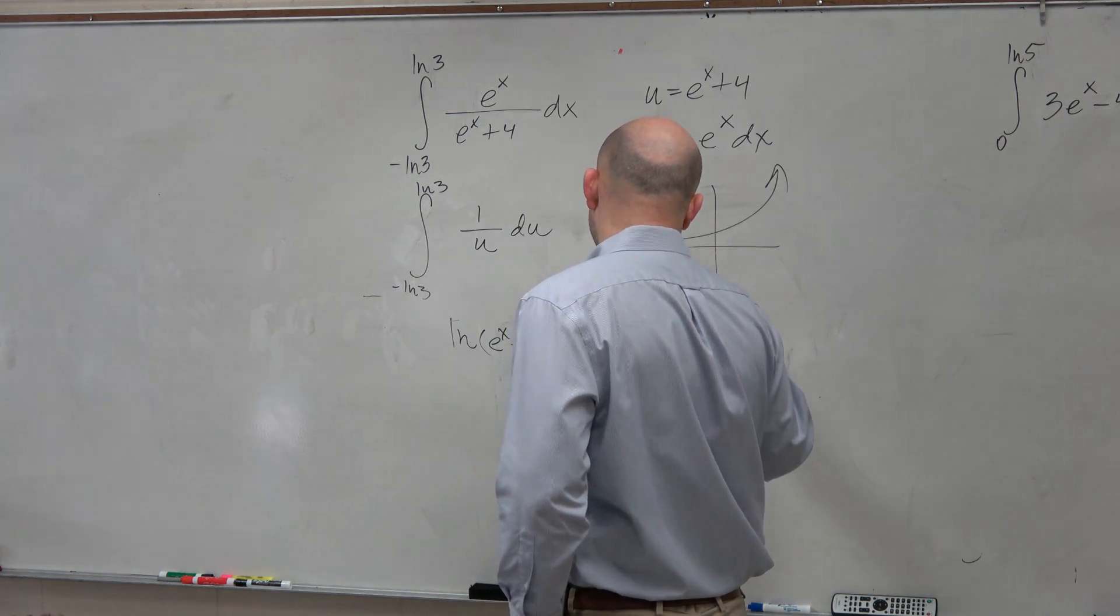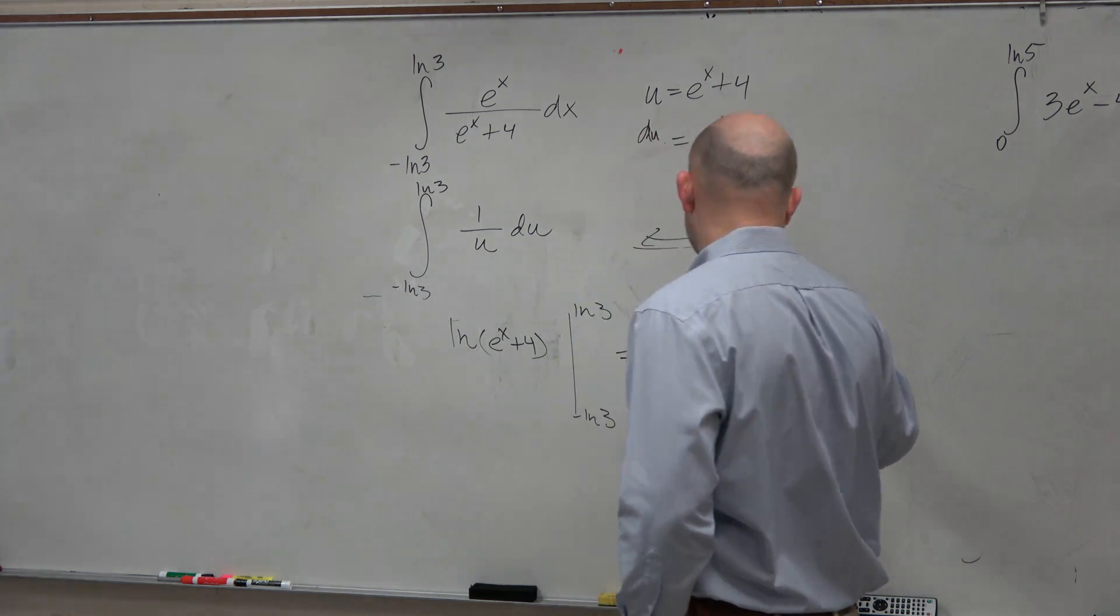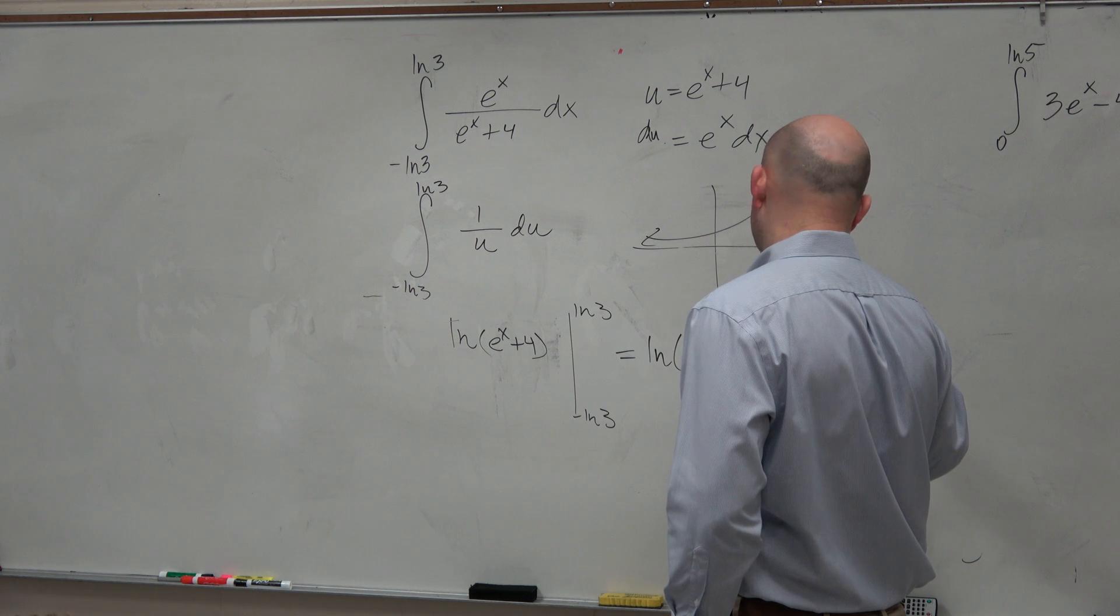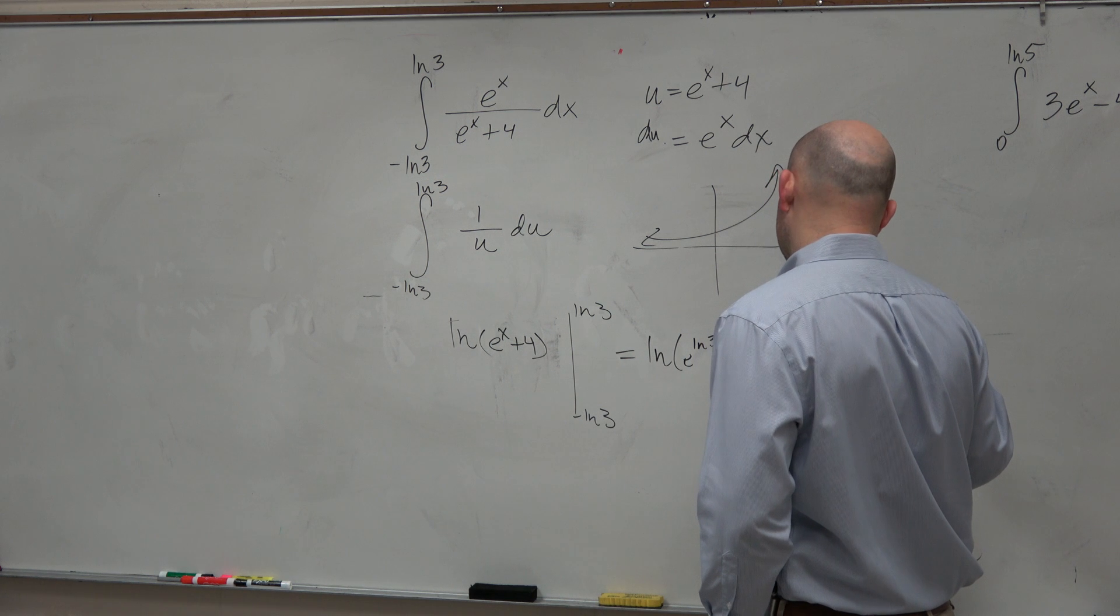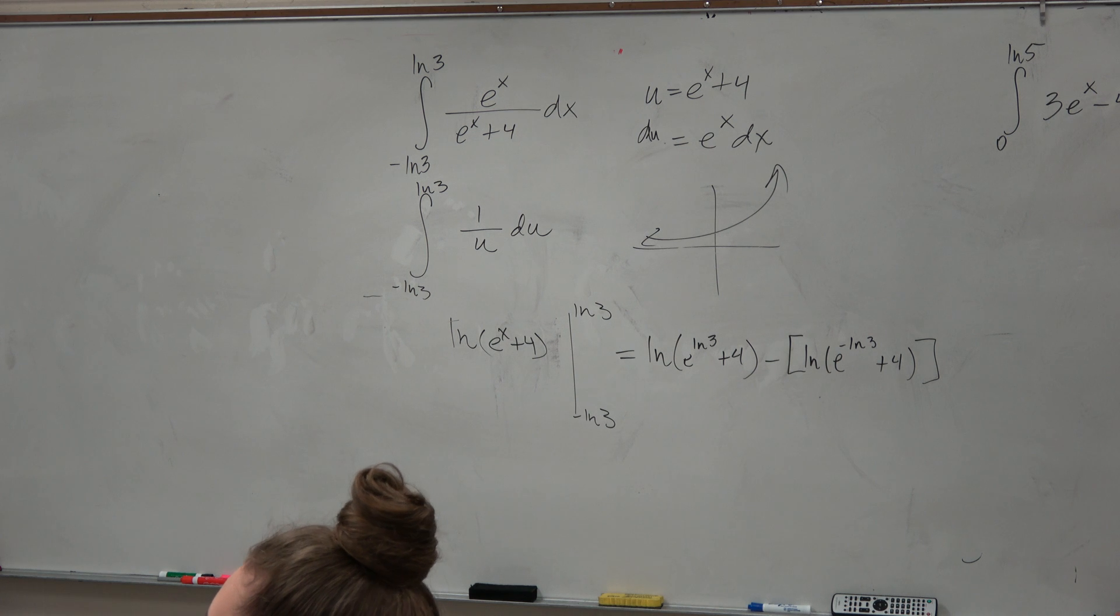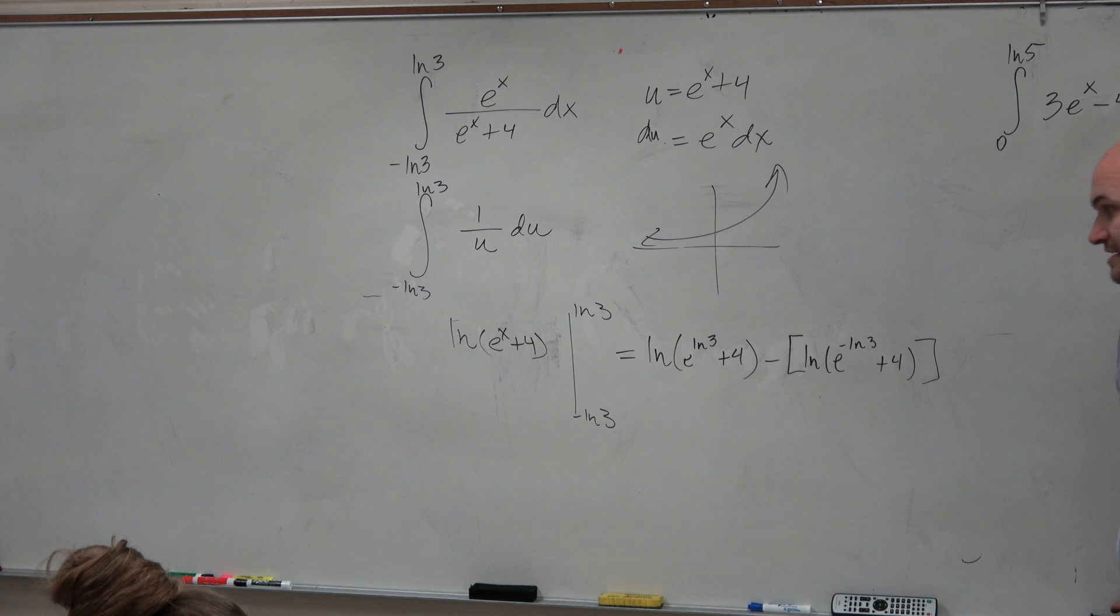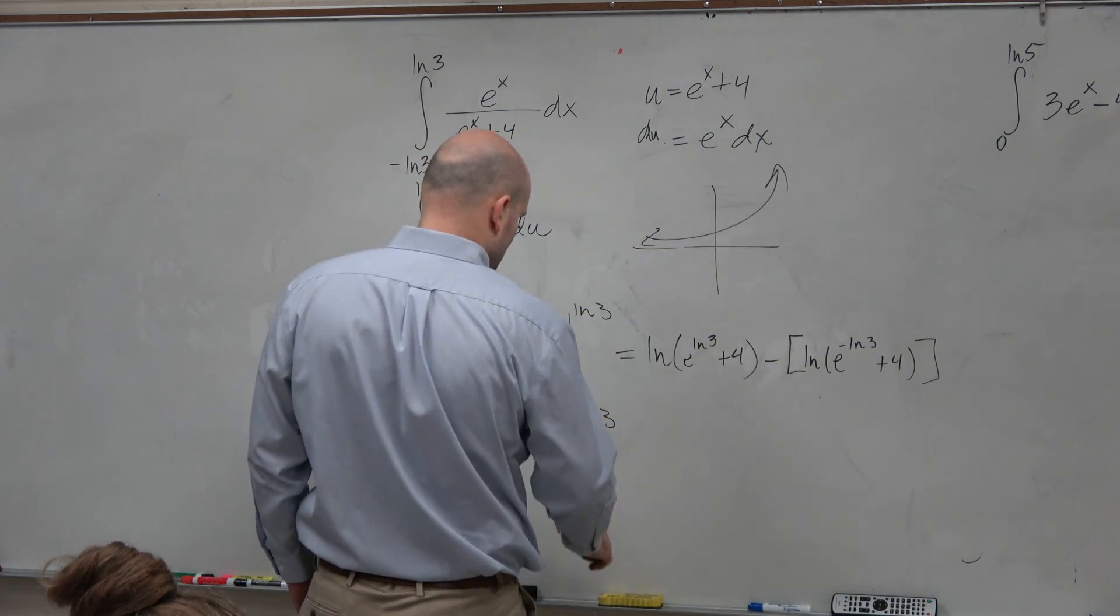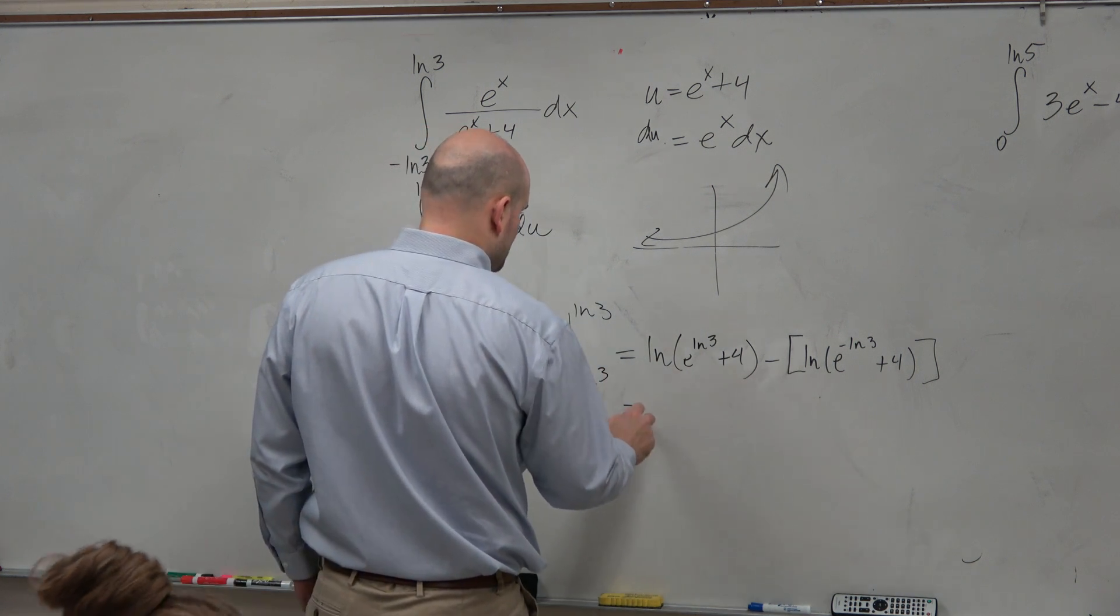ln of e to the ln of 3 plus 4 minus ln of e to the negative ln of 3 plus 4. Did everybody see what I did and how I wrote that in there? Now, we've got to simplify some things. I kind of wrote that too big. Let's put that down there. All right. So let's do the next line.